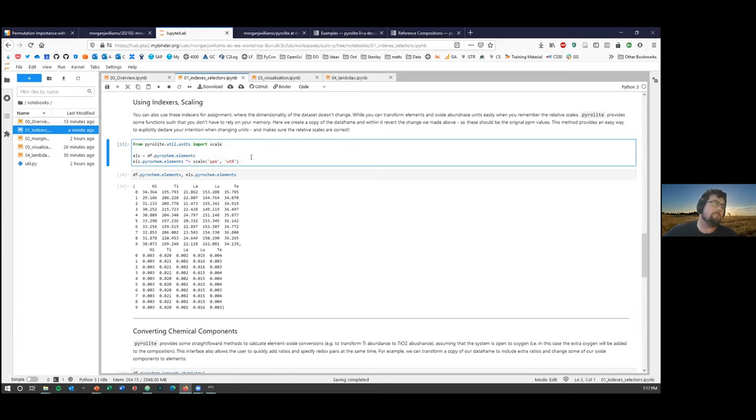There's also functions for scaling data. So often you want to scale elemental data from say ppm to weight percent. In this case we're just pulling out the elements from our data frame, making a copy. And in that copy, we're scaling our data from ppm to weight percent. You can see the top one here is the original data which is in ppm, and this is scaled back down to weight percent, so divided by 10,000.